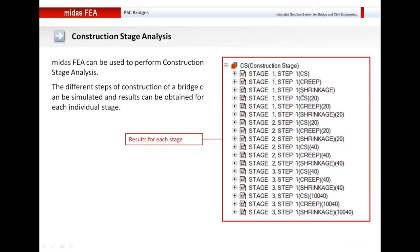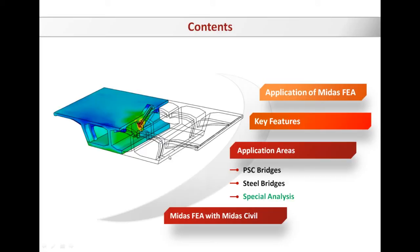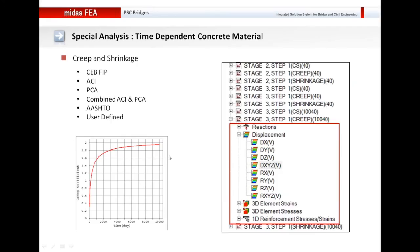When you perform the construction stage analysis in Midas FEA, you obtain the results for individual stages. You can also define the time-dependent properties for concrete — creep and shrinkage properties. We have different codes built in as a feature in Midas FEA: CEB-FIP code, ACI, PCA, combined ACI and PCA, and AASHTO, by which you can automatically define the creep and shrinkage parameters of concrete. If you want to define your own parameters, you can define user-defined parameters for creep and shrinkage, and once you define these you can obtain different results for creep and shrinkage.